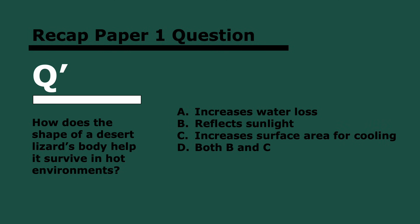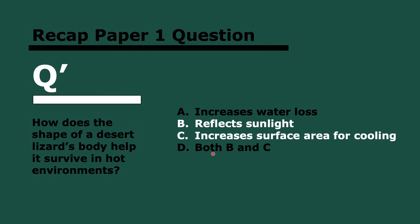How does the shape of a desert lizard's body help it survive in hot environments? The answer is D, which is both B and C. Increasing water loss would not help — it should do the opposite. Reflecting sunlight lowers body temperature, and increasing surface area for cooling allows heat from the inner body to diffuse out more effectively. So a higher surface area allows for more cooling.